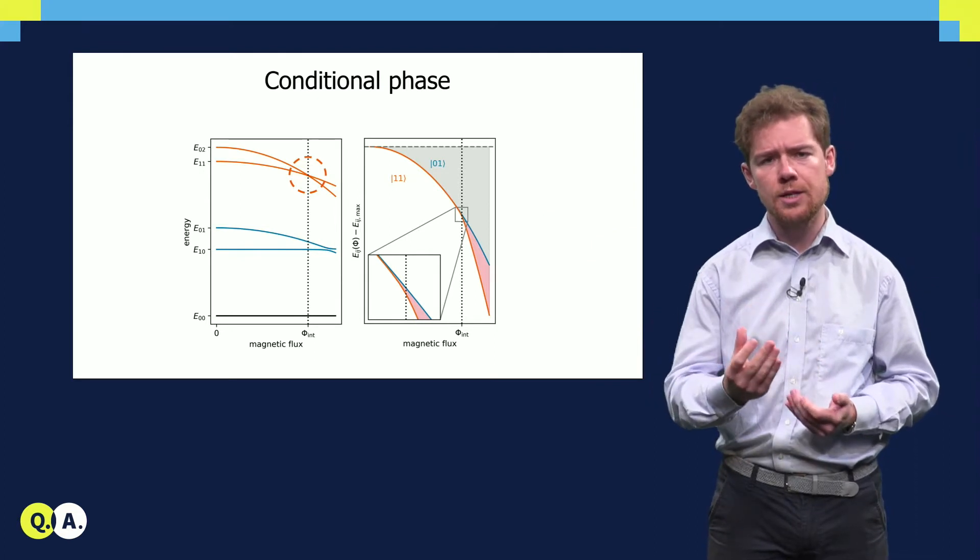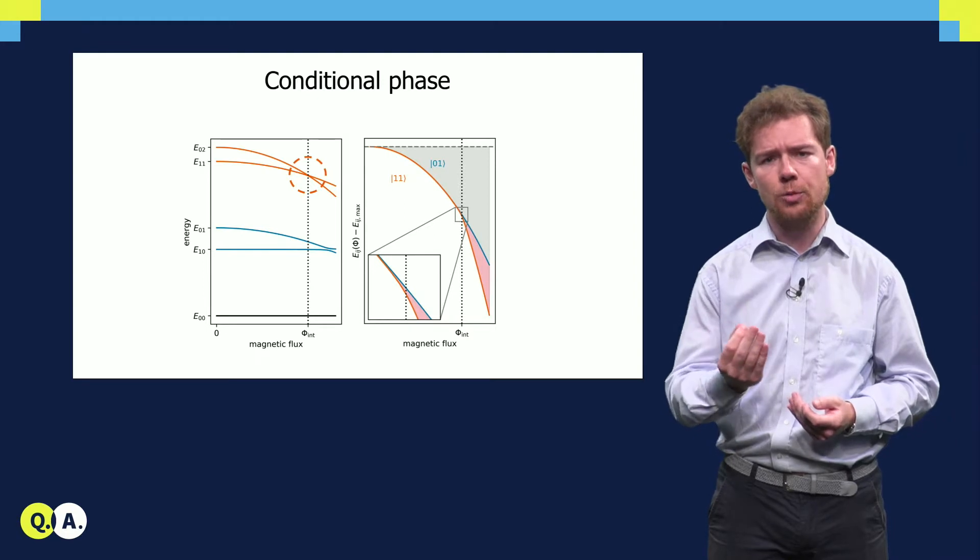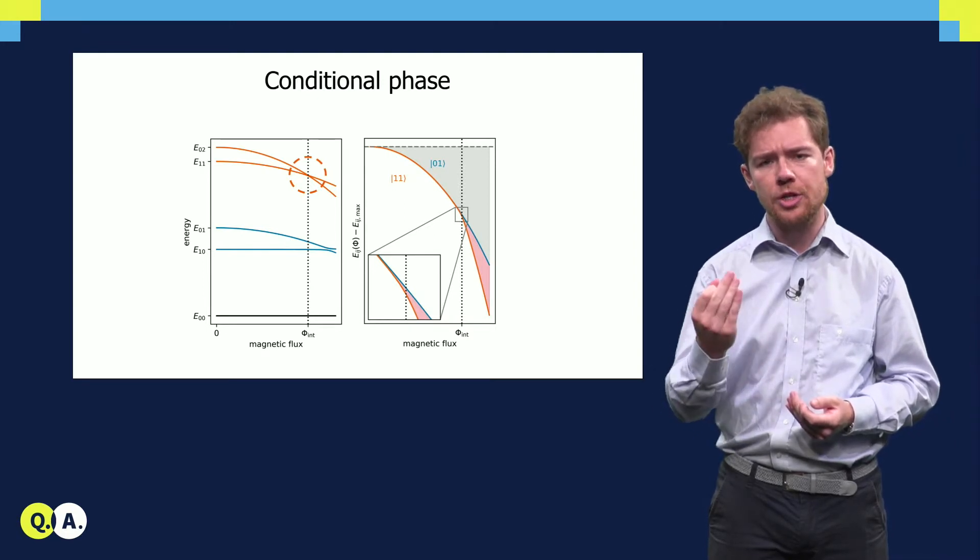By detuning the qubit into the red region, it is possible to make the target qubit acquire a phase conditional on the state of control qubit.